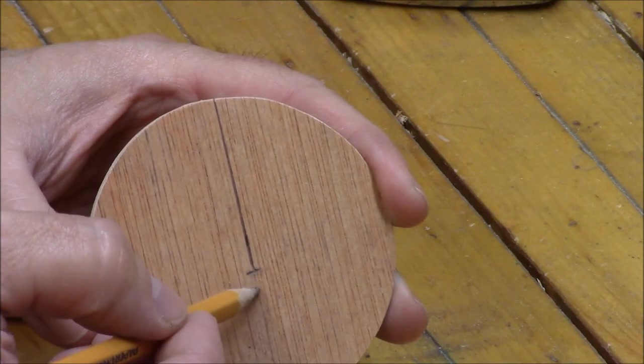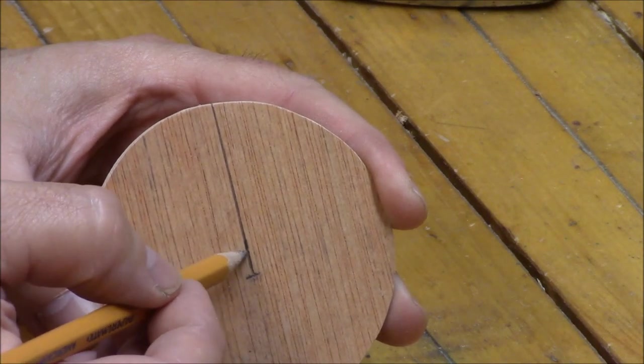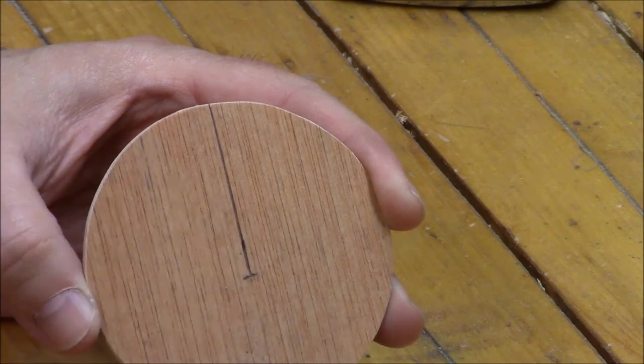So I'm going to bring this back about an eighth of an inch and then mark out a sixteenth on either side of this line. That's where I'm going to cut my groove.